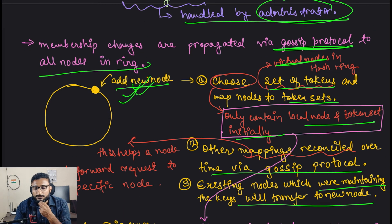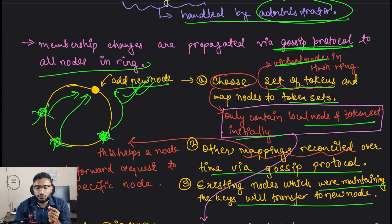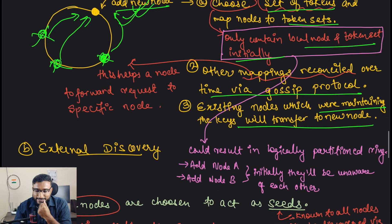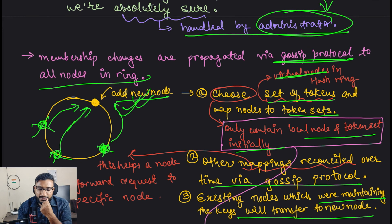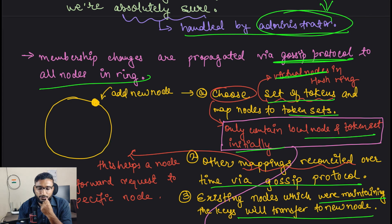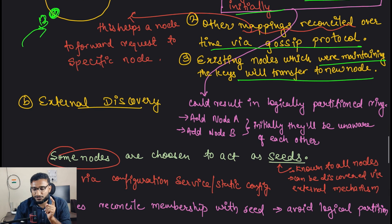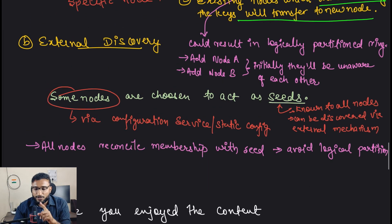The existing nodes which were maintaining the keys for the token ranges now owned by the new node will transfer that data to it, and once the transfer is complete it will be removed from the old nodes. One potential problem: if at the same time two newly added nodes join the ring simultaneously, initially both are unaware of each other because gossip protocol hasn't occurred yet, which might create logical partitions.